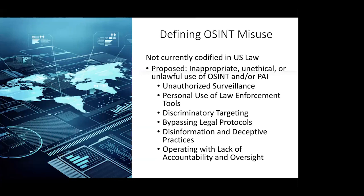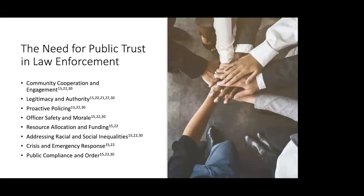Now that we've defined what we mean by open source misuse, we will talk about why public trust is necessary for the landscape in the first place. There's a huge need for public trust in law enforcement — it's relied on very heavily to get cooperation from community members reporting crimes and providing information that helps solve cases and ensure public safety. Trust in law enforcement enhances legitimacy and authority of police officers, which is very important for good active policing. Officers are safer in the community when they are trusted agents — they are more easily able to de-escalate volatile situations, and it helps boost their morale.